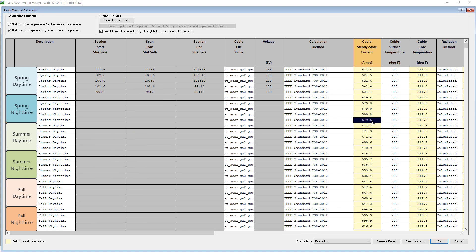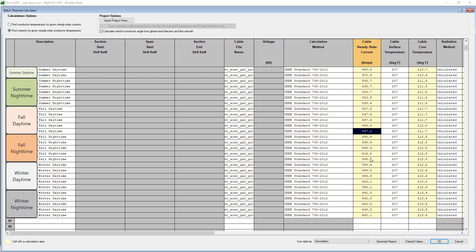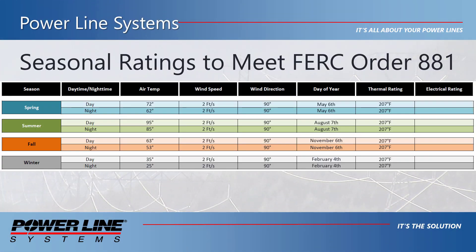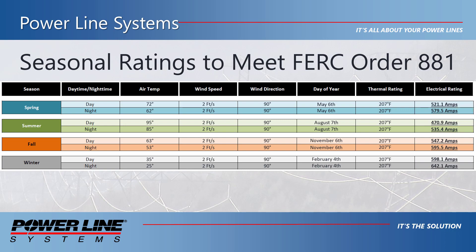After this, we should look for whichever row in each rating condition gives the lowest steady-state current and use that for the rating of the line for each of the eight different scenarios. In the end of this exercise, we have the following ambient adjusted ratings for the day and nighttime of the four different seasons. Notice how when the ambient temperature is lower, or during the nighttime when there is no solar radiation, the amount of electrical current we can push through the lines is higher for the same power line. We hope that you find this video helpful in using PLSCAD to calculate your ambient adjusted and seasonal ratings for meeting the requirements of FERC Order 881.